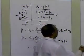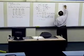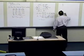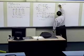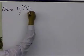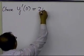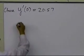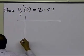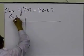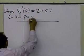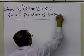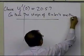So based on this, this is what happens, now I'm going to choose y prime of 0 to be equal to 20.57. So when I do that, this is what I get. Again, you're going to use Euler's method, so go through the steps of Euler's method.